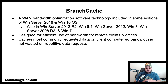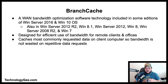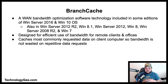Next we have BranchCache, which is a wide area network bandwidth optimization software technology included in some editions of Windows Server 2016 and Windows 10, as well as some editions of Windows Server 2012, Windows 8.1, Windows Server 2012 R2, Windows 8, Windows Server 2008 R2, and Windows 7. BranchCache was designed to allow for efficient use of bandwidth for remote offices and clients, optimizing bandwidth when users access content on remote servers.